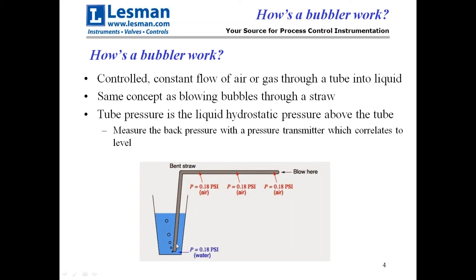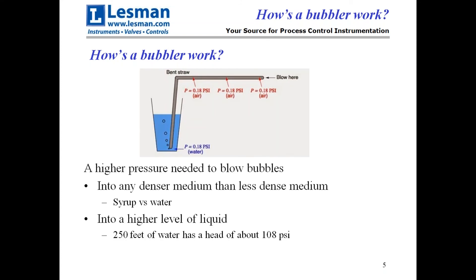In an industrial situation, we just measure the back pressure in the tube to determine what the hydrostatic pressure of the liquid column is. You need a higher pressure to blow bubbles into a denser medium than a less dense one. So for the same level, you have to have more pressure to push a bubble through syrup than through water. A 250-foot column of water has a pressure of over 100 psi.